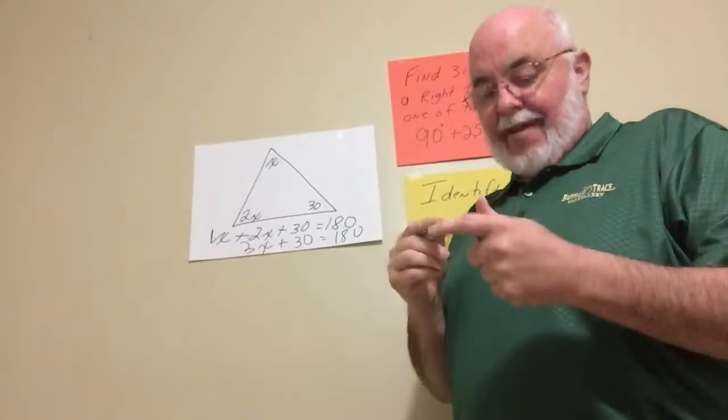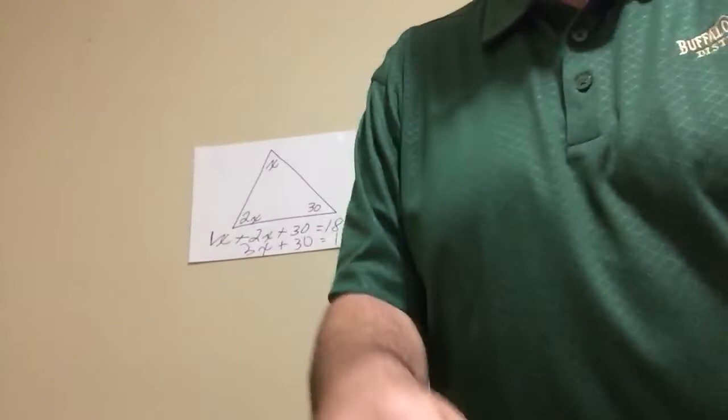Now it's our favorite two-step equations. Subtract 30 from both sides.